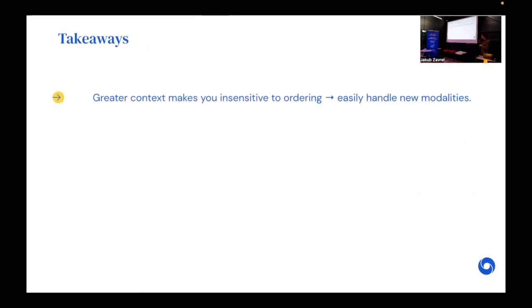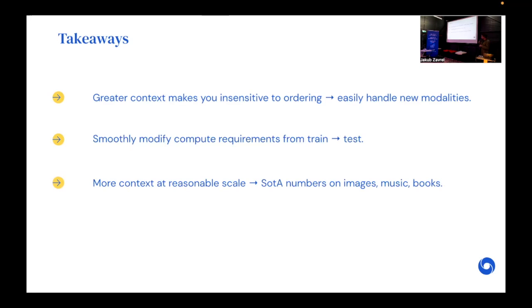Just to give you a sense of the takeaways here, we find that greater context makes you insensitive to ordering, which allows you to easily handle new modalities. We can smoothly modify the compute requirements from train to test, which gives us the ability to deploy this model on increasing hardware if we have it to get better performance, or to deploy it in edge-like situations where we don't have the same compute requirements. We find that at a reasonable scale, we can incorporate much more context, which allows us to get state-of-the-art numbers on a variety of different tasks. And finally, Perceiver AR itself is very simple to implement. Basically, take a decoder-only transformer, replace the input layer with a cross-attention, set up the masking, and you're good to go. This can also be used as an adaptation for existing decoder-only transformers, which is something we're exploring in the future.